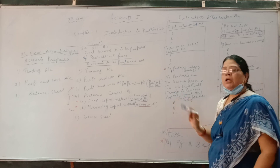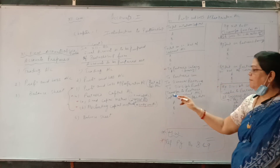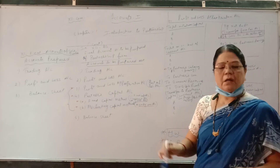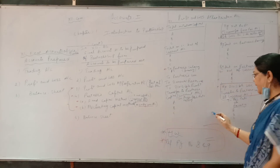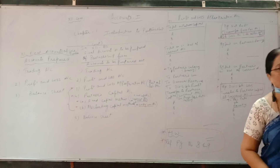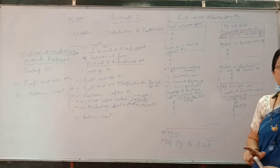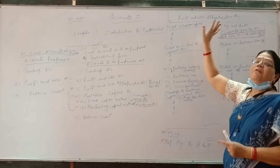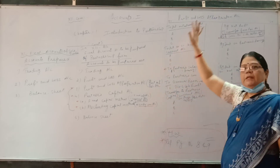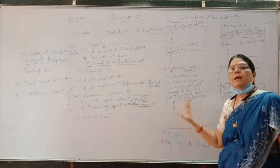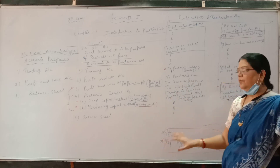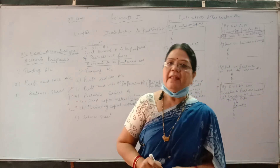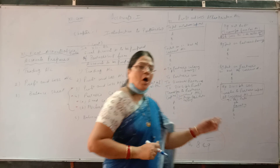Transfer the divisible profit to partners' capital or current account in their profit and loss ratio or equally. The reason we write 'capital or current account' is because it depends on which method we are using — whichever account applies, write accordingly. After writing this, carry out the total on both sides. This completes the profit and loss appropriation account, which is part of profit and loss, not compulsory to prepare but advisable — to find out the divisible profit shared among partners in their ratio.